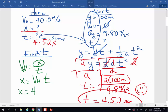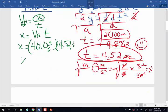My horizontal velocity is 40 meters per second. My time is 4.52 seconds. And so my horizontal displacement x is going to be 181 meters. All right, let's keep it going.